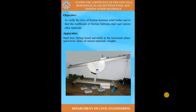The objective of this experiment is to verify the law of friction between solid bodies and to find the coefficient of friction between steel and various materials. Each material has its own friction depending on its type — if a material is smooth then the friction will be small and the coefficient of friction will have a small value, and if there is roughness on the surface then there will be more friction.